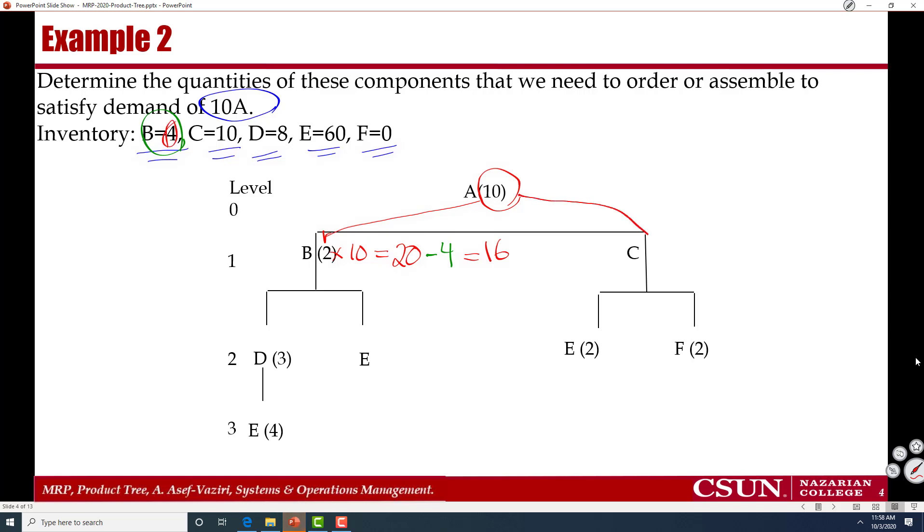For each A, I need 1C. For 10A, I need 10C. But because I already have 10Cs, therefore I need no C. Because I need no C here, therefore I don't need any E or any F.